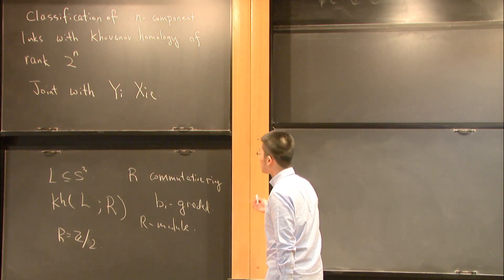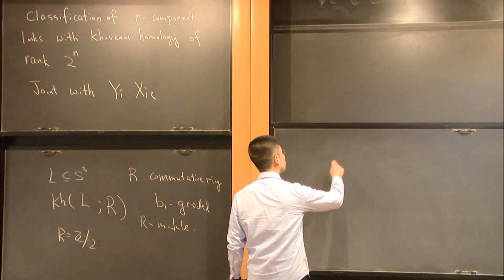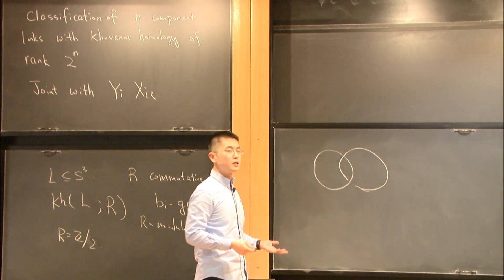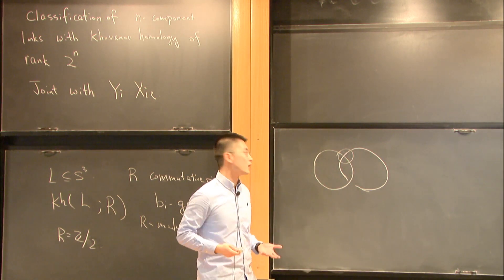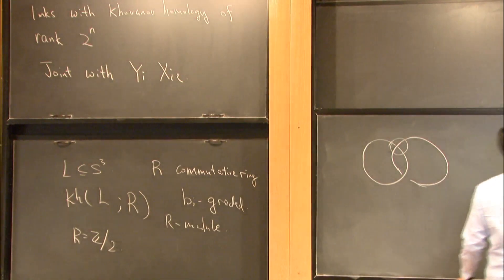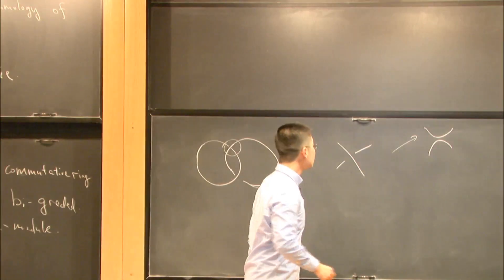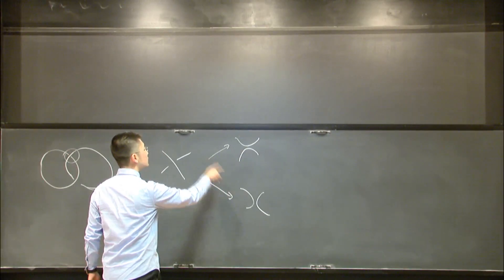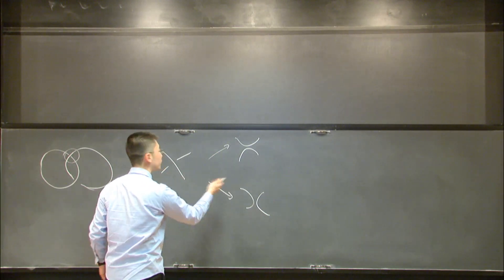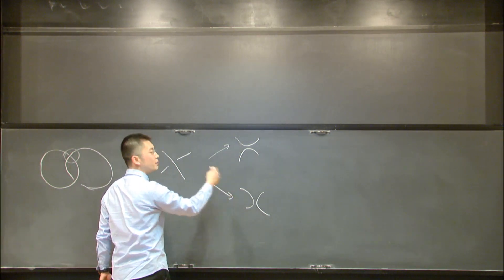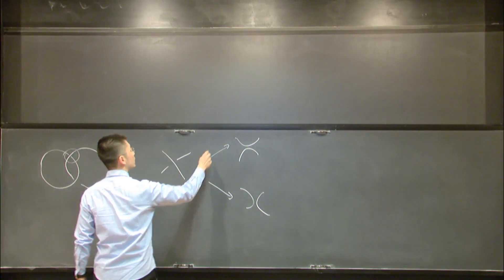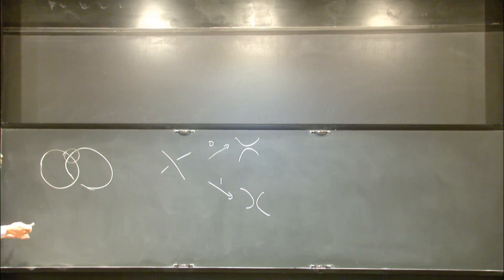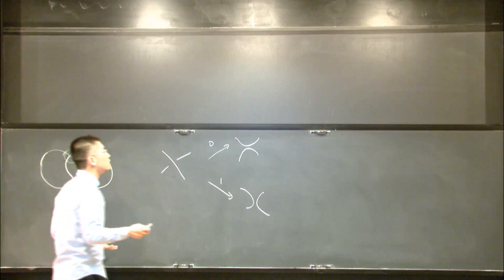The definition of quantum homology is actually completely combinatorial. Basically, what you do is look at a link diagram. For each crossing, there are two ways to smooth out the crossings. If we have a crossing, we can change it to one resolution or another. This is a local operation on the diagram of the link. These two crossings can be differentiated by the orientation of the background plane — people call this the 0 resolution and the 1 resolution. If we have a diagram with n crossings, then there are 2^n different ways to resolve the crossings, giving 2^n different diagrams.